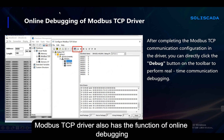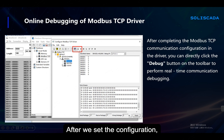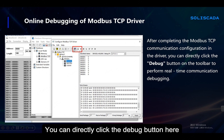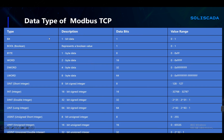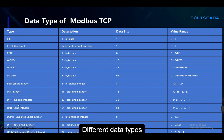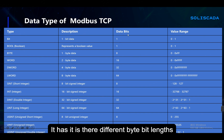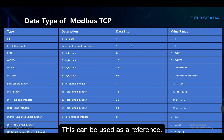The Modbus TCP driver also has the function of online debugging. After we set the configuration and data blocks, you can directly click the debug button. Its data packets can be collected directly, and you can clearly see the communication situation and whether the data is correct. Here is some information about Modbus TCP data types. Different data types have different byte lengths and data ranges. This can be used as a reference.